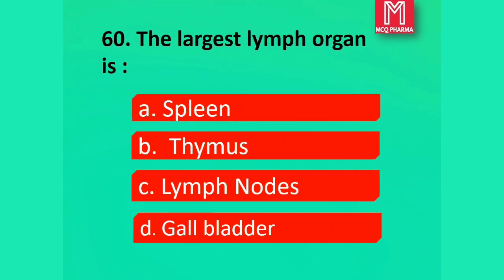Question number 60. The largest lymph organ is: Option A, [unclear]. Option B, Thymus. Option C, Lymph nodes. Option D, Gallbladder. Correct answer: Option B, Spleen.